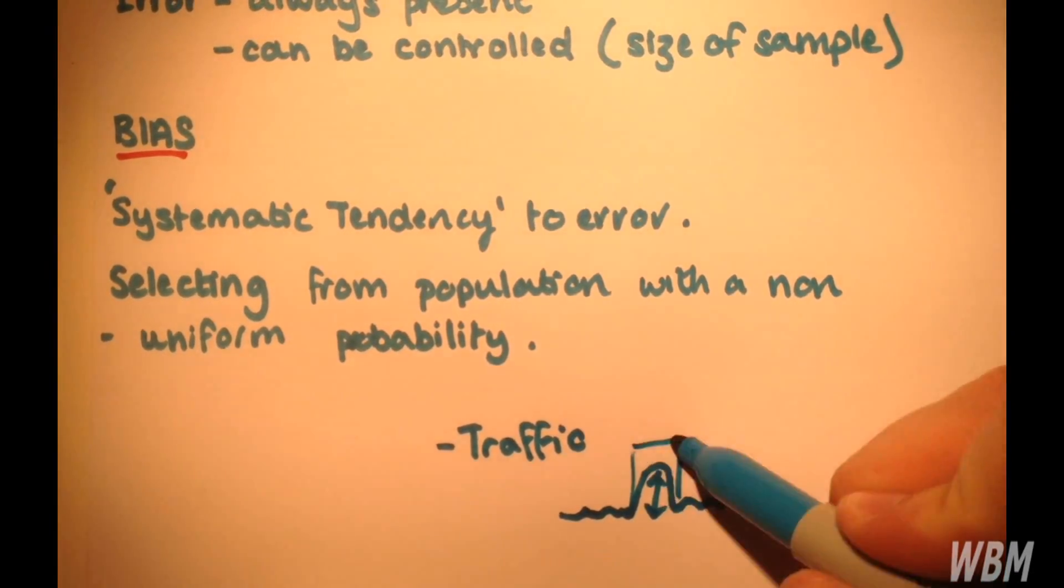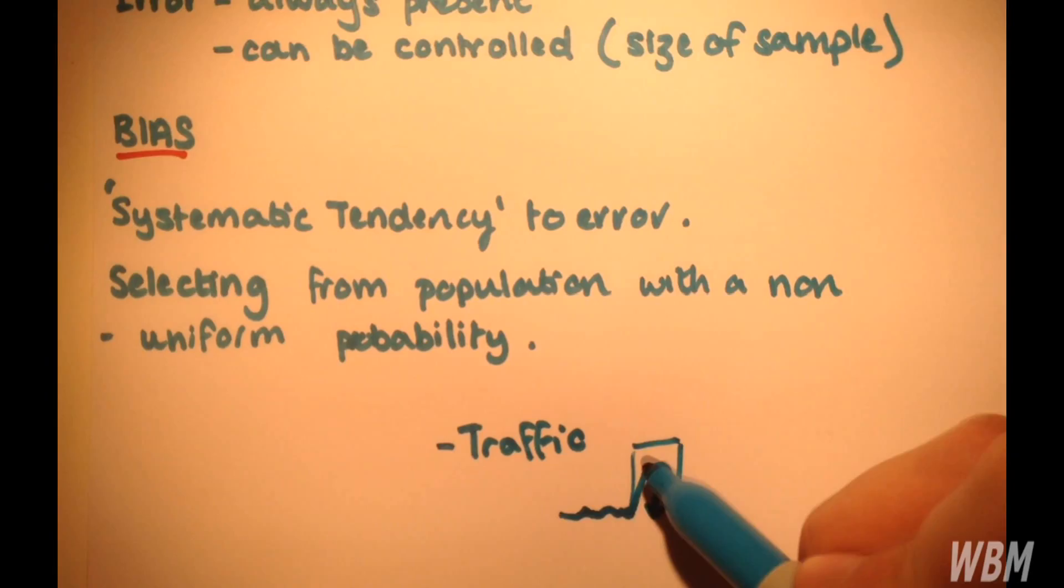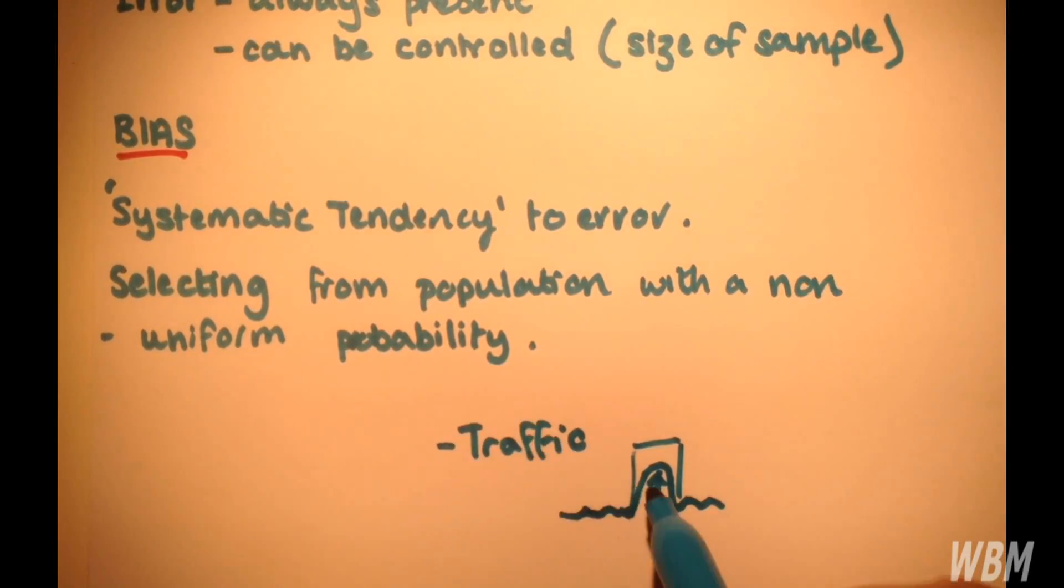Now if we were to use this as our sample, this would create a bias, because this would be a non-uniform probability. There would be more cars on the road, so this is an example of bias.